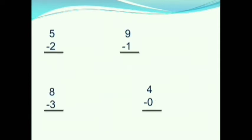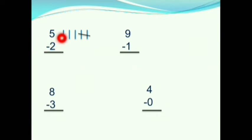Children, see this question: 5 minus 2. Here first we have 5, so we will draw 5 lines. Next we have 2, so we will cut 2 lines. How many lines are remaining? 1, 2, 3. 3 lines are remaining. So we will write 3. Therefore, 5 minus 2 is equals to 3.